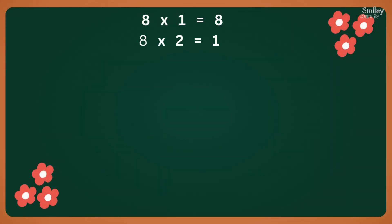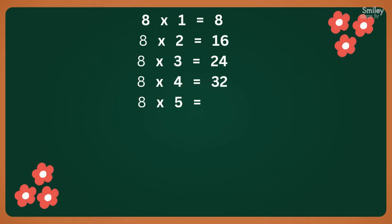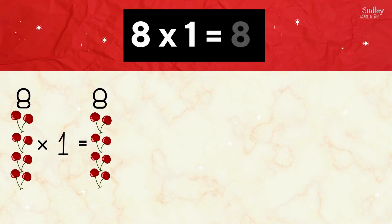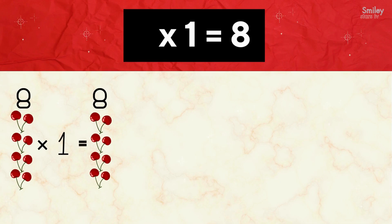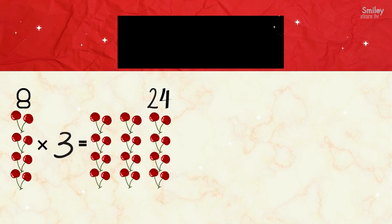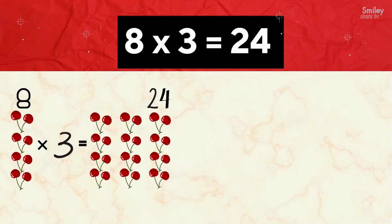Yay! 8 times table is fun! 8 ones are 8. 8 ones are 8. 8 twos are 16. 8 twos are 16. 8 threes are 24. 8 threes are 24.